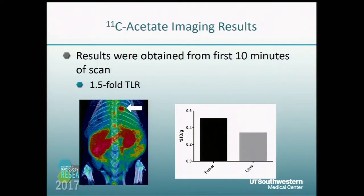One of the other radiotracers that has been used before with HCC imaging is carbon-11 acetate. It provides just a modest tumor-to-liver ratio of about 1.5, but it clearly delineates the tumor within the liver.